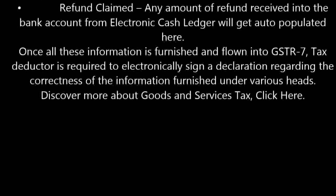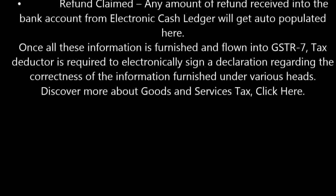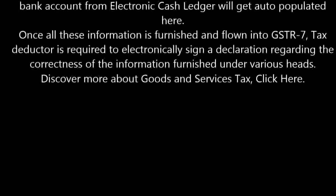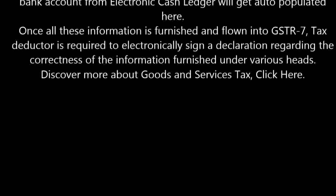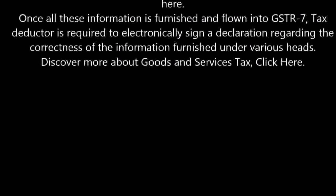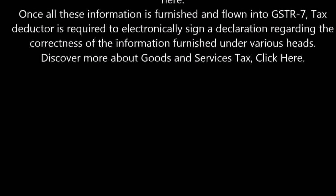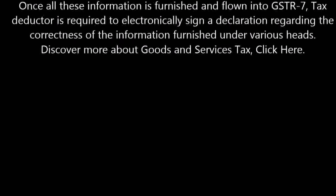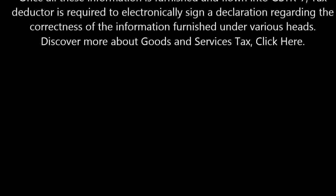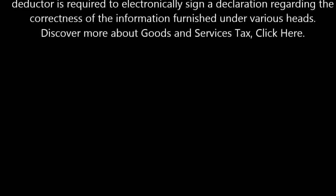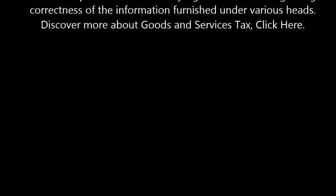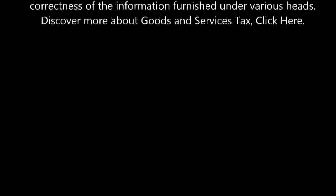Under refund claimed, any amount of refund received into the bank account from the electronic cash ledger will get auto-populated here. Once all this information is furnished and filed in GSTR-7, the tax deductor is required to electronically sign a declaration regarding the correctness of the information furnished under various heads.